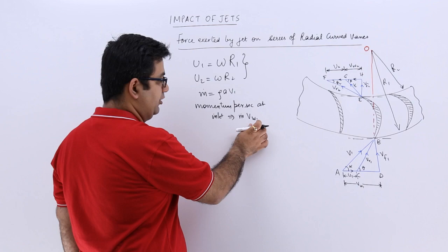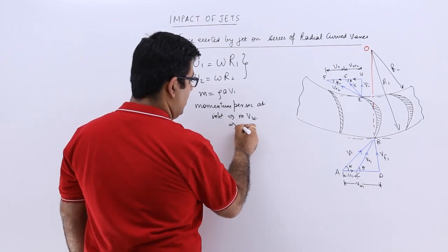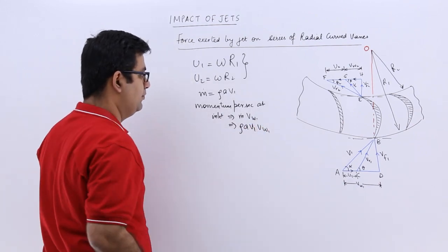That is, sorry, not the flow but the whirl velocity. Whirl velocity is vw1, so this becomes ρAv1 into vw1.